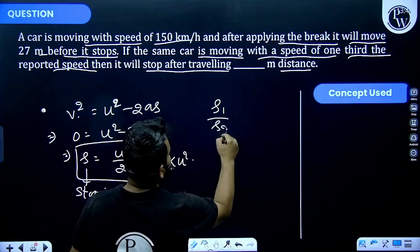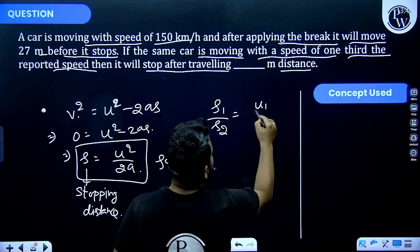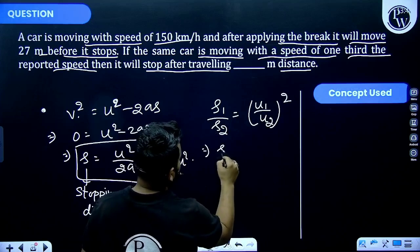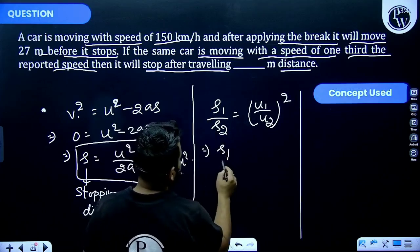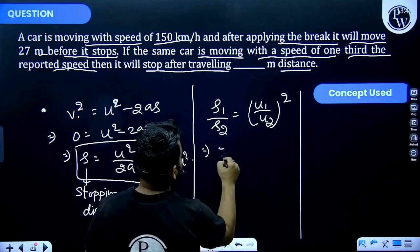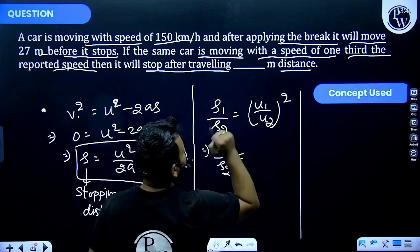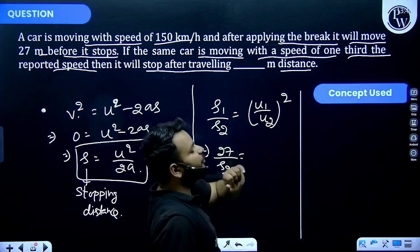Stopping distance 1 divided by stopping distance 2 equals (u1 by u2)². That implies s1 divided by s2, s2 is given as 27 meters, and u1 by u2, u2 is one-third of u1, that means it is equal to 3².